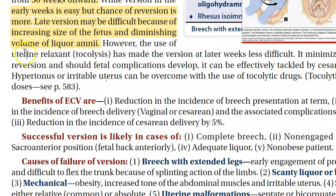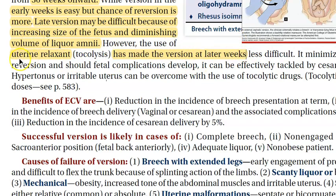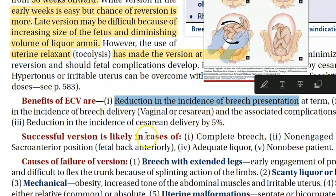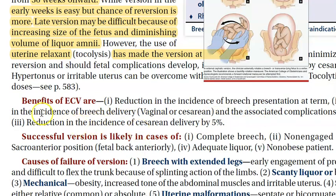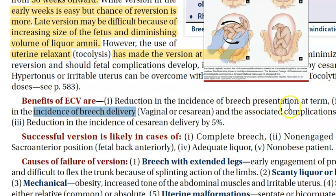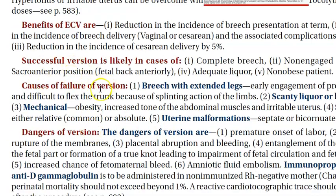Using tocolytic drugs — uterine relaxants — you can attempt version at later weeks. Uterine relaxants have made version at later weeks less difficult. The benefits of doing this rotation are: you reduce the incidence of breech presentation, reduce the incidence of breech delivery and its associated complications, and cesarean section can be avoided.